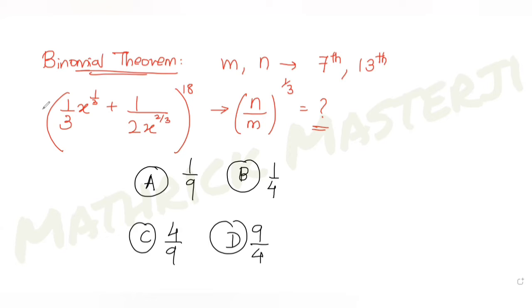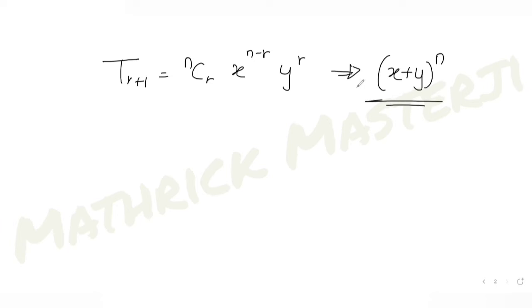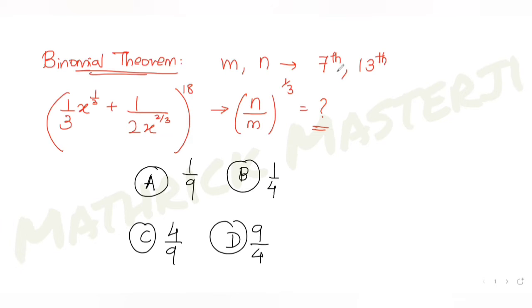For the solution, m and n are the coefficients of the 7th and 13th terms respectively. I'll use the formula for finding the nth term in a binomial expression: the (r+1)th term equals nCr · x^(n−r) · y^r, for the expansion of (x + y)^n. Using this, I need the 7th and 13th terms.